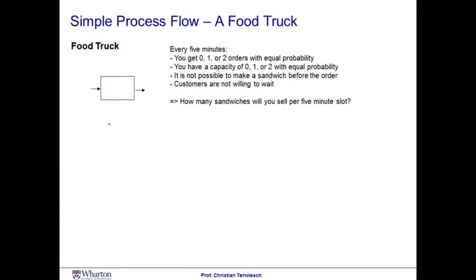In our calculations for the Subway case, we assumed that workers would work like robots. It would take, for example, exactly nine seconds per customer to put the cheese on the sandwich. We will stick with this assumption for a little longer, but I want you to understand the implications of assuming that these processing times have absolutely no variability associated with them.